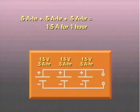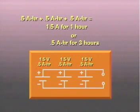Tallying on the time side of the ampere-hour ratio, this same parallel connection of voltage sources could deliver 0.5 amperes to a load for three hours. In either case, the voltage would remain the same, 1.5 volts.